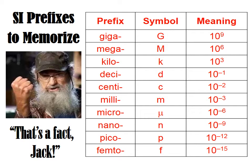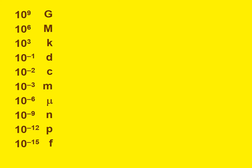Deci is kind of related to, for example, decade — 10 years in a decade, similar to one-tenth. There are 100 years in a century, so that's kind of related to centi, which actually means one one-hundredth. There are 100 cents in a dollar, so that's similar to one one-hundredth. Here's another mnemonic.